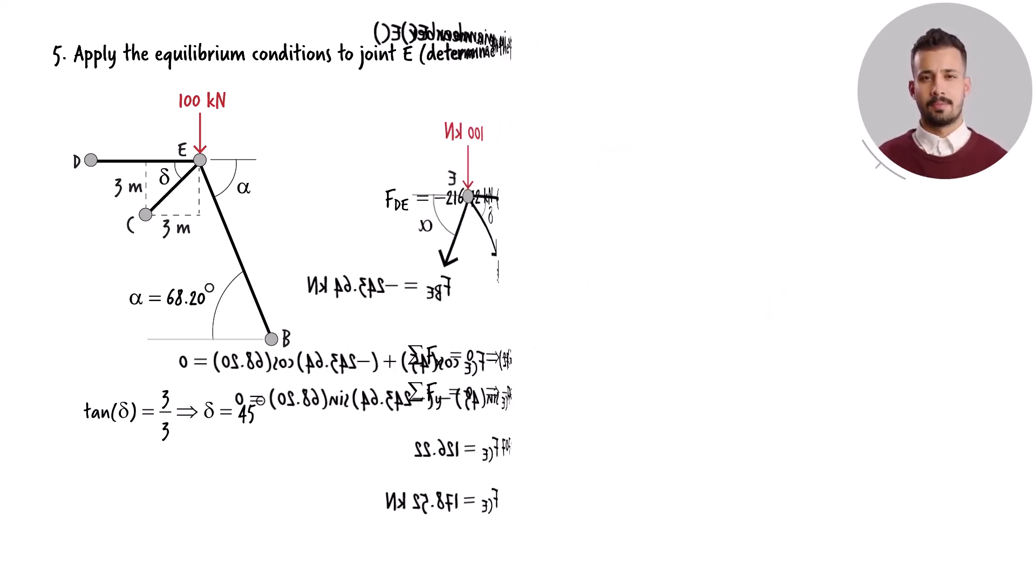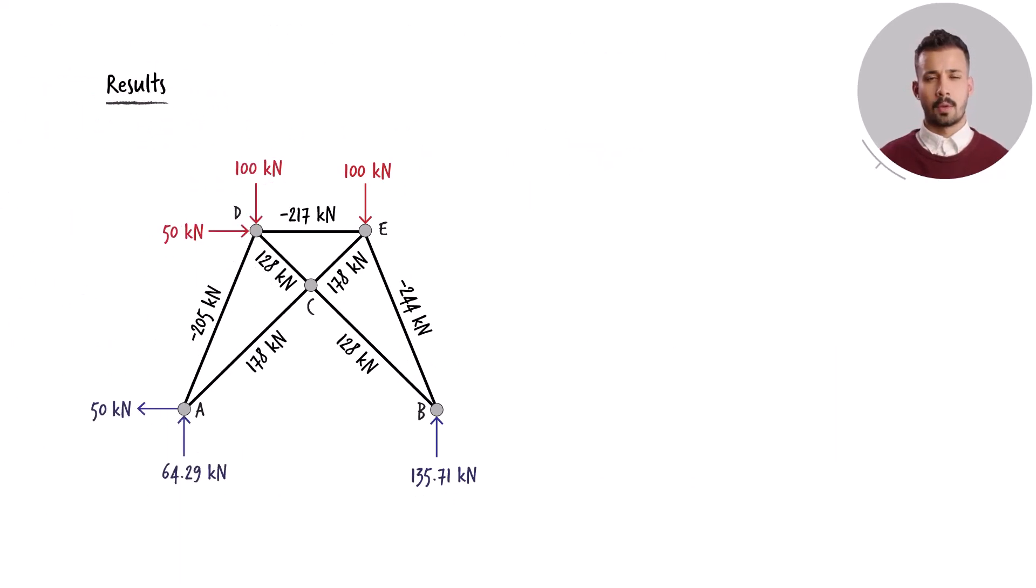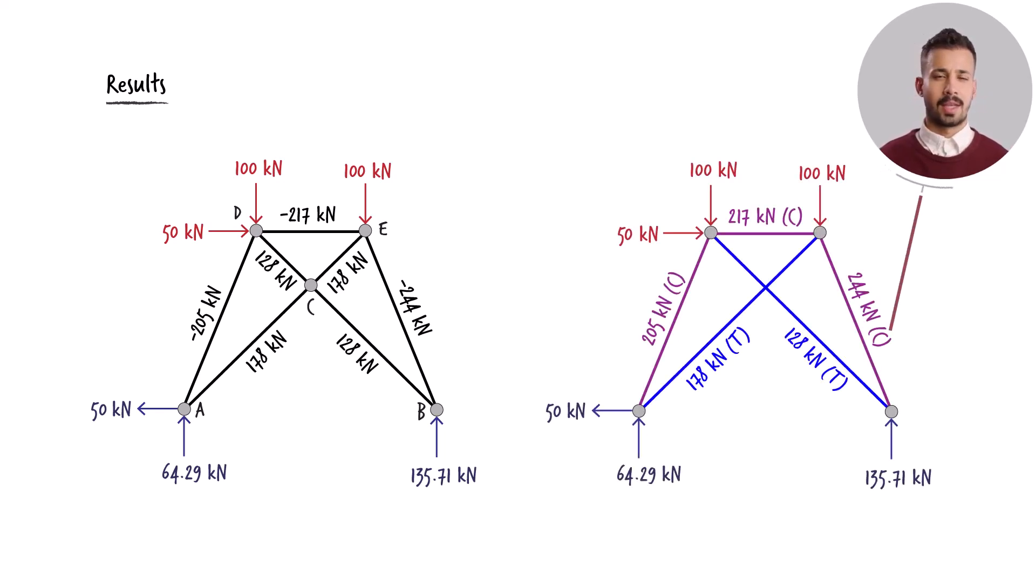To summarize the findings, we can annotate each member with its corresponding calculated force magnitude. Alternatively, we can use the letter C to indicate compression, and the letter T to signify tension next to each member.